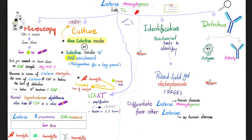How can we diagnose Listeria? By microscopy, it's a gram-positive rod. But unfortunately, when it's Listeria meningitis, you cannot use gram stain on the CSF sample. Why not? Because usually the level of Listeria is so low — the concentration is so low, way beneath the threshold of detection, i.e., below 10 to the 4th power bacterial cells in your CSF.